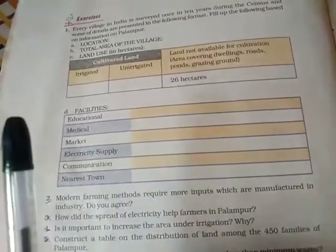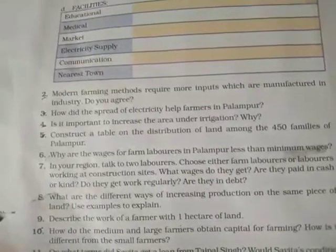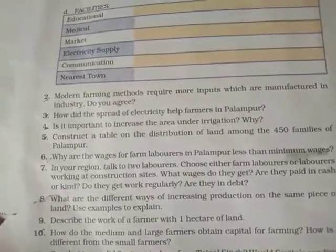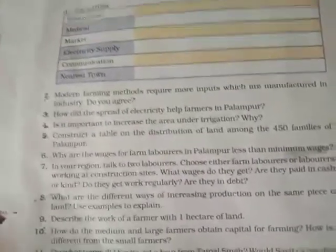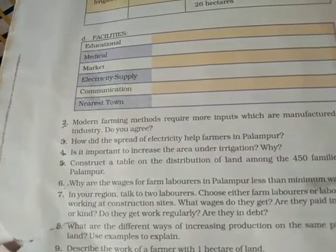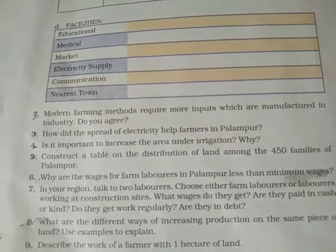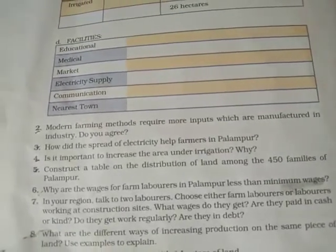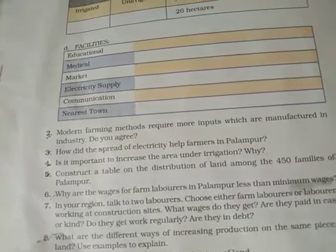Question two: Modern farming methods require more inputs which are manufactured in industry — do you agree? Yes, we agree. Modern farming requires more inputs than traditional farming. It requires chemical fertilizers, pesticides, pump sets, farm machinery, electricity, high yield varieties of seeds, and water supply. Most of these inputs are manufactured in industries, and water supply is provided by canals and tanks.